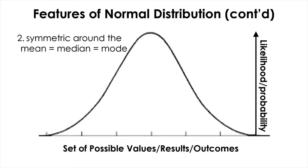Another feature of normal distribution is that all three central tendency measures we've learned — mean, median, and mode — have the same location, which is exactly at the center. The normal distribution is perfectly symmetric around these three central tendency measures.